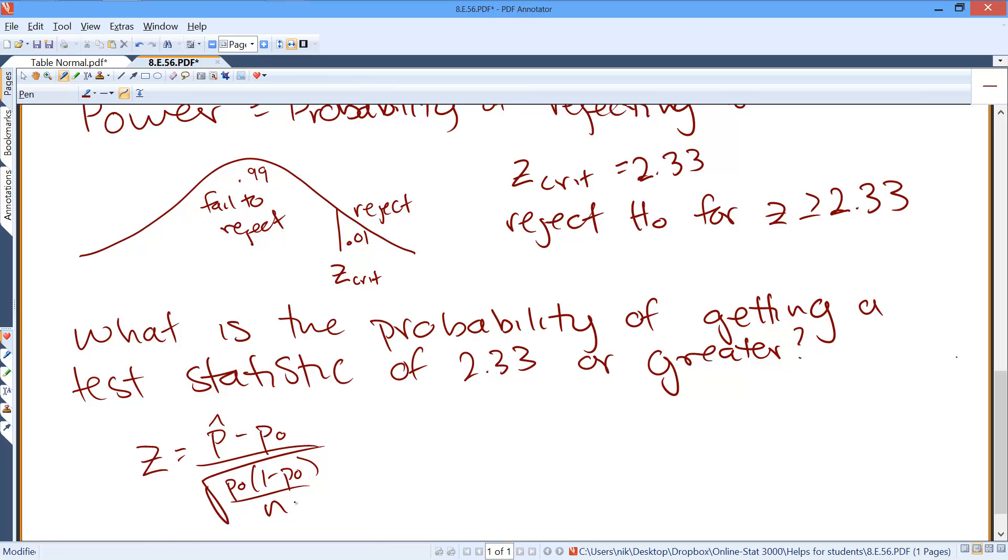But in our situation, that was our hypothesized value because that was our best information. But if we're looking for the probability of actually getting our test statistic, then we can use actual population proportions because we know our population proportion. Sorry, scratch that.